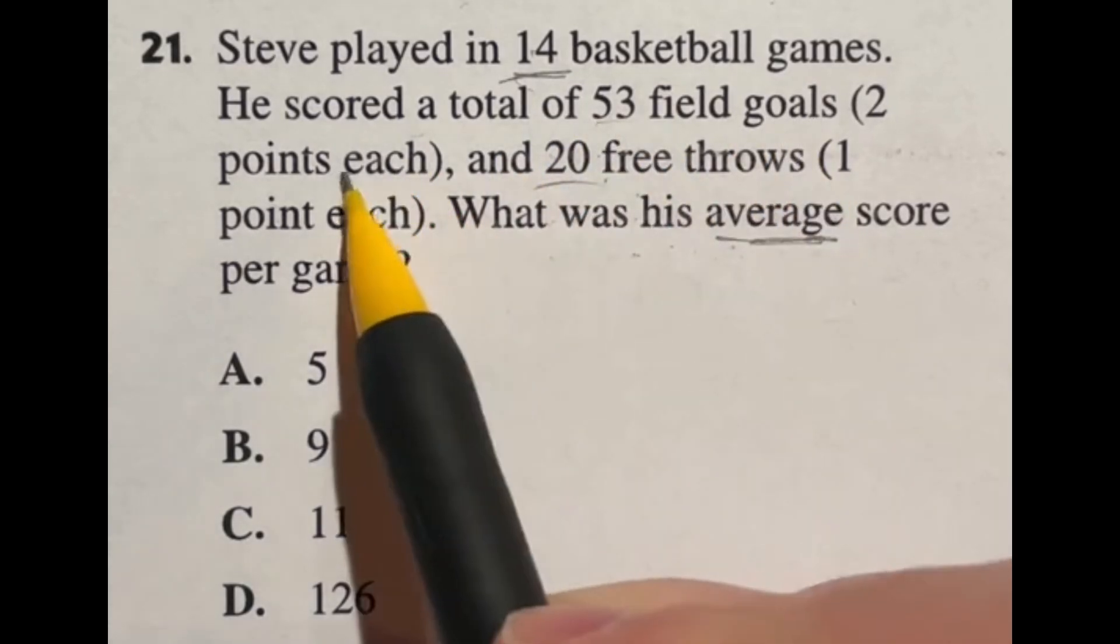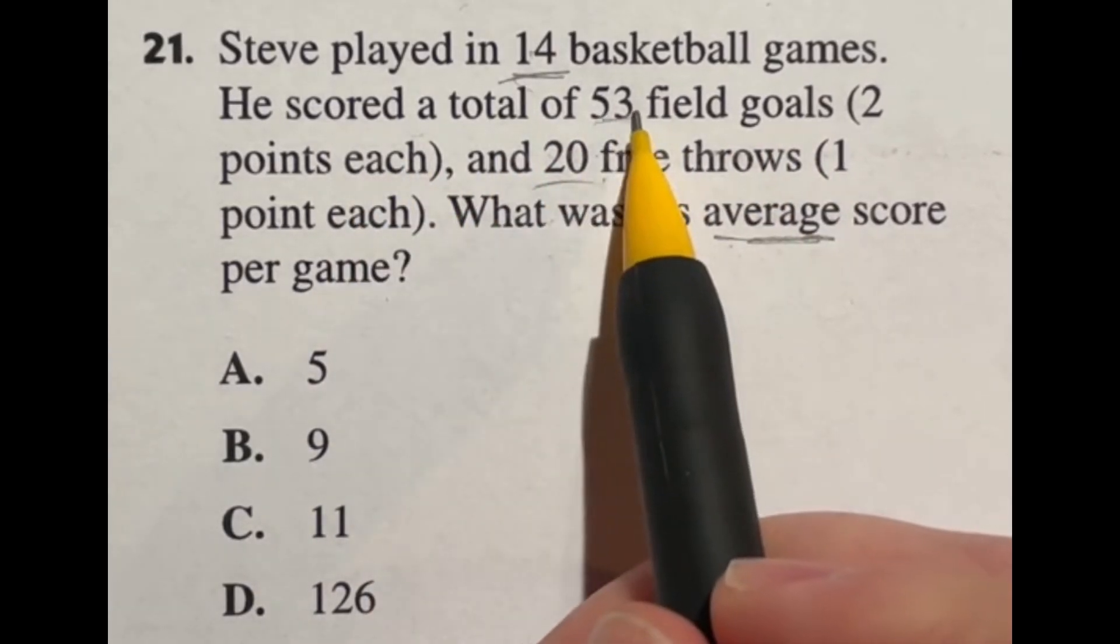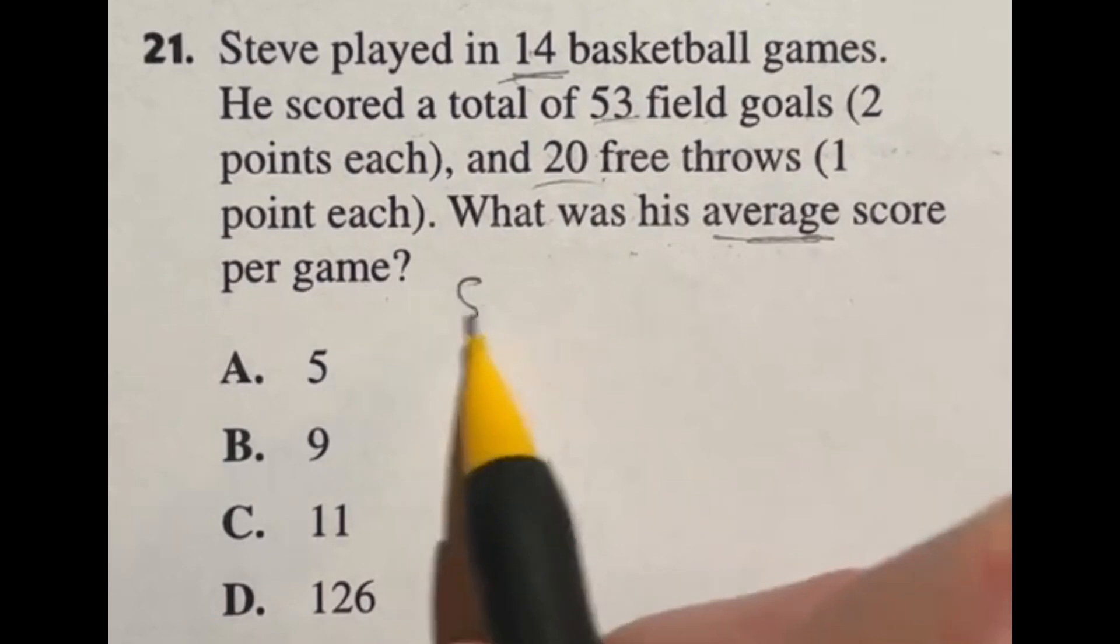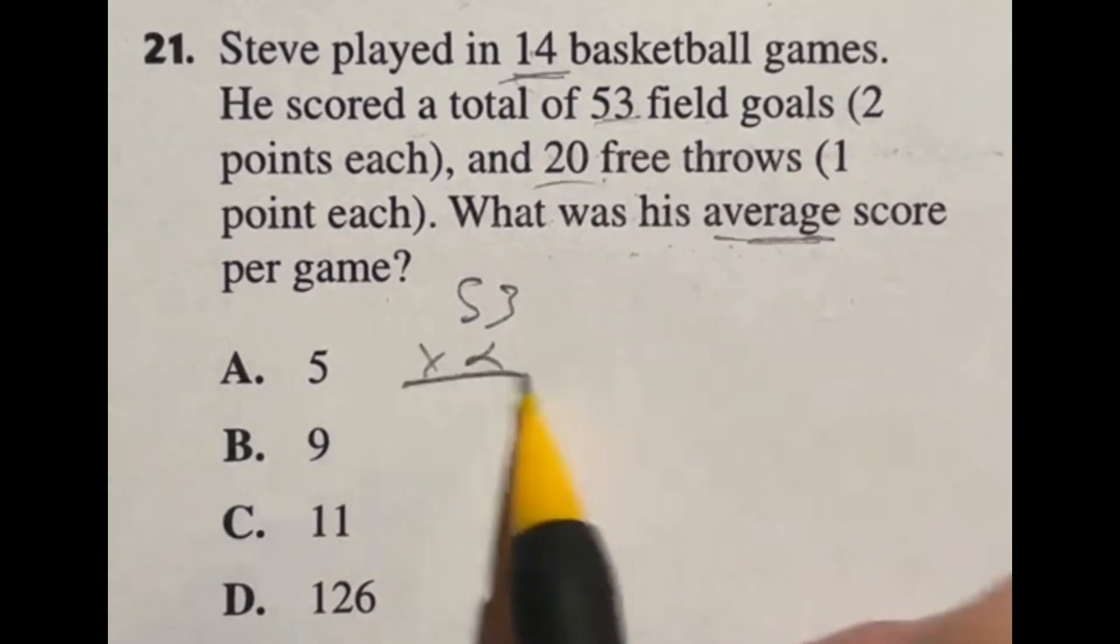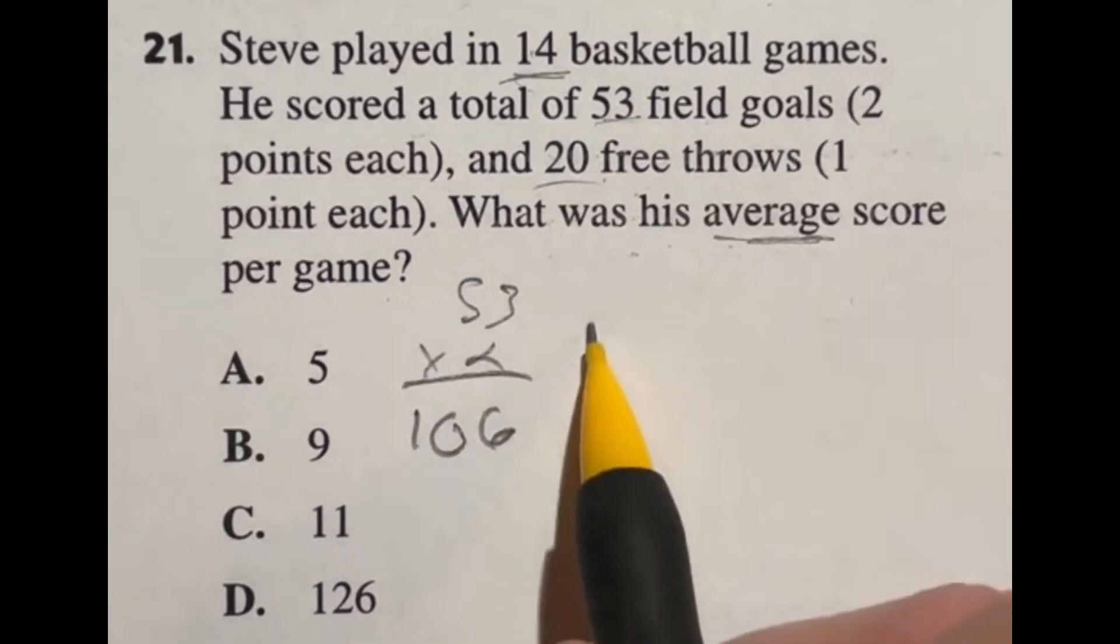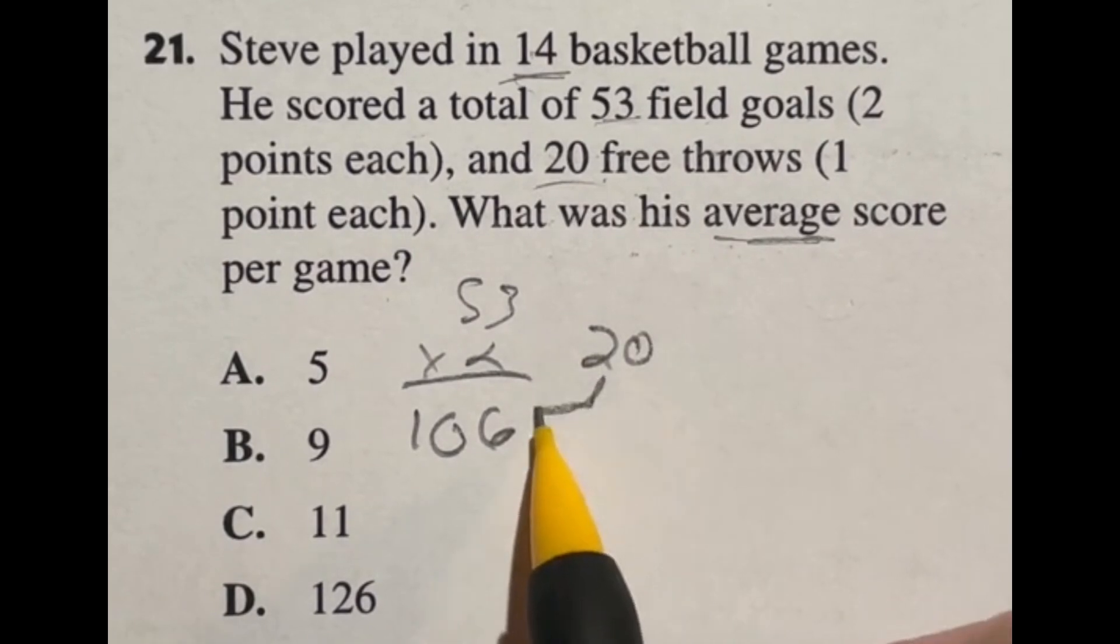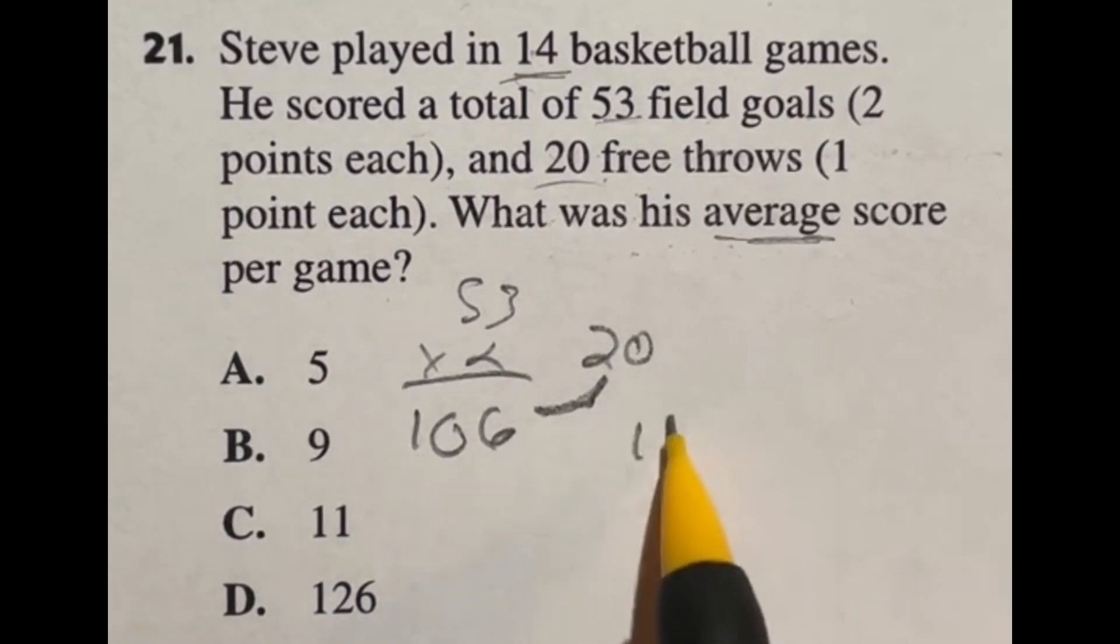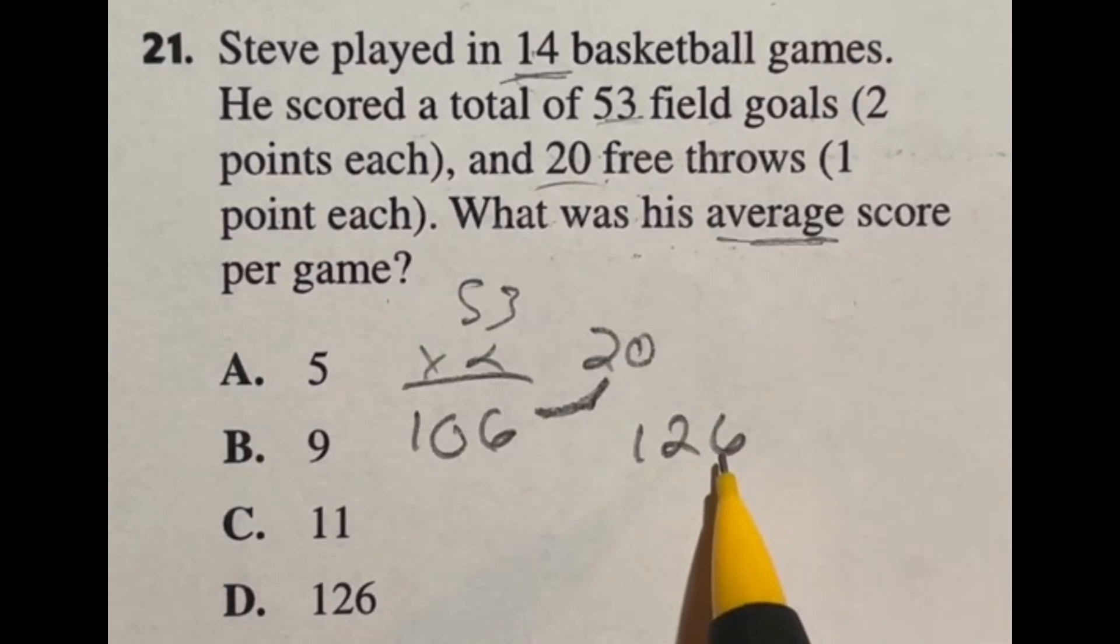Let's start off with the field goals, two points each. If we have 53 field goals that he made, 53 times 2 is going to give us 106. Now we have the additional 20 points that he got from a free throw. So all together between the two we have 126 points scored.